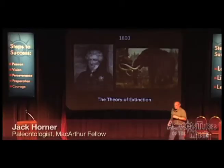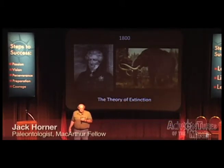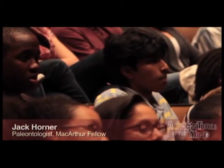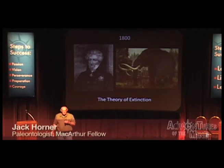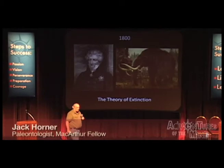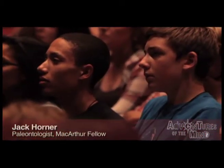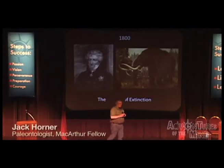Think about that — the theory of extinction. Does everybody know that organisms have gone extinct? Can you imagine not knowing that? Why did it take until 1800 to figure it out? Because it took that long to explore the world. There could always possibly be some organism we think is extinct living somewhere else. Georges Cuvier, a Frenchman, proposed the theory of extinction based on mammoth elephants.